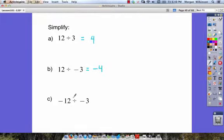And then when we say negative 12 divided by negative 3, well, we're saying, what's the opposite of a negative? Well, the opposite of a negative must be a positive. So our answer is going to be positive 4.